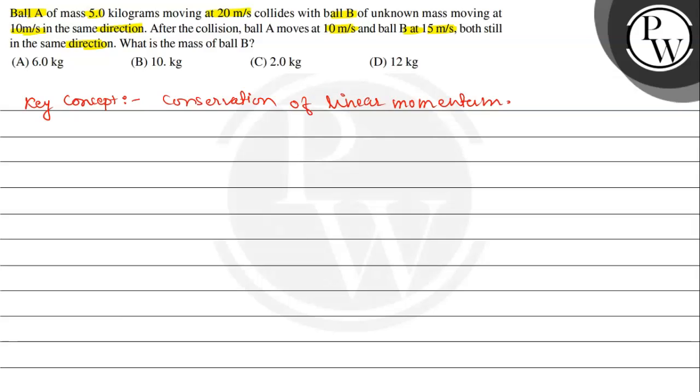Toh initial, sabse pehle agar hum yahan pe likhaye. Mass hum log consider kar rahe hain ki mass jo hai ball ka - considering mass of ball is m, thik hai? M hum consider kar rahe hain mass ka. Ek ball ka mass diya gaya hai 5 kg, thik hai?